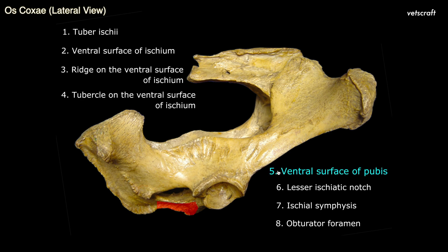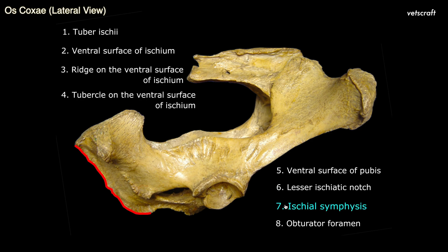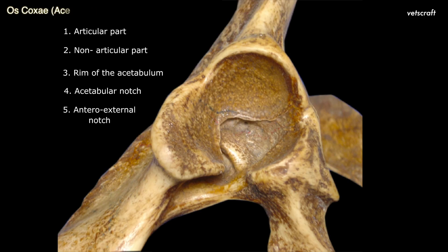Ventral surface of the pubis. The lesser sciatic notch is formed by the lateral border of ischium. Ischial symphysis is formed by the fusion of adjacent medial borders of ischium. The obturator foramen is an elliptical foramen on the floor of the pelvis between the pubis and ischium. This picture shows a close view of the acetabulum. It is a cotyloid cavity formed by ilium, ischium, and pubis.